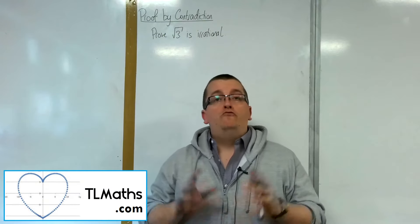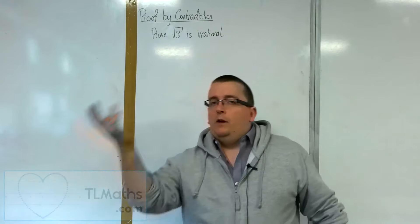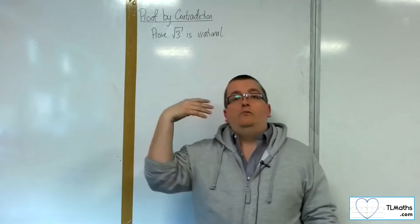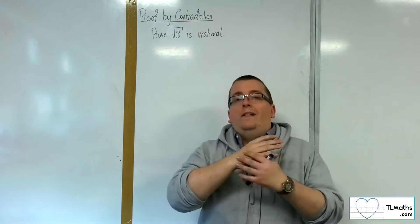In this video I want to go through the proof that root 3 is irrational. We've seen the proof that root 2 is irrational, and the proofs for root 3, root 5, root 7, they all follow precisely the same structure.